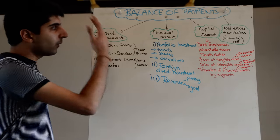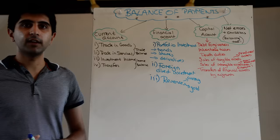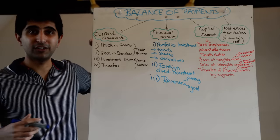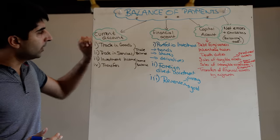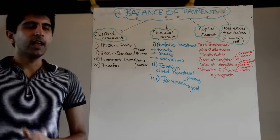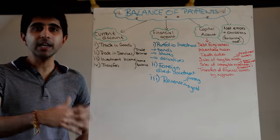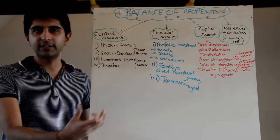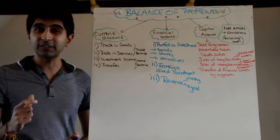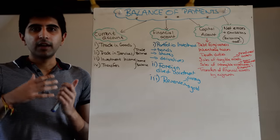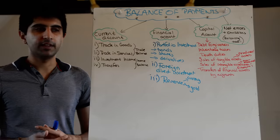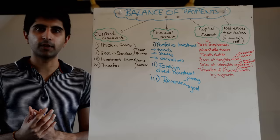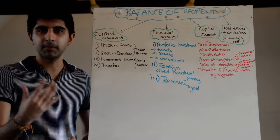In terms of theory, knowing now what transactions are recorded in different accounts, the key thing is to realise how a current account deficit can be maintained in the long run. A current account deficit means a country is buying more from the rest of the world than it's selling — more money is leaving than entering. That's not sustainable. For a country like the UK, which has a large current account deficit, that means we are owing the rest of the world, and that money's got to come from somewhere.